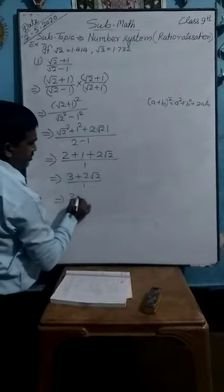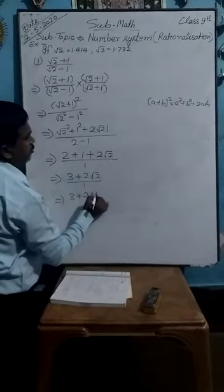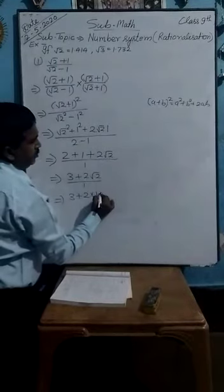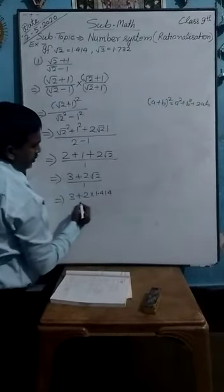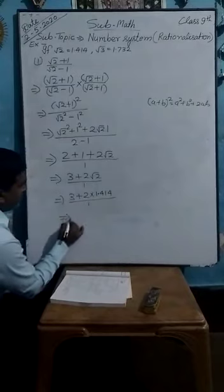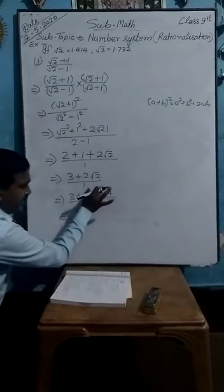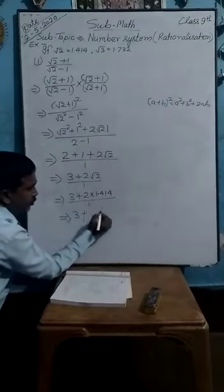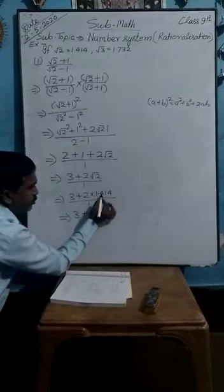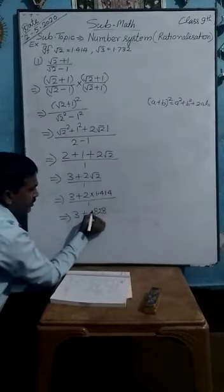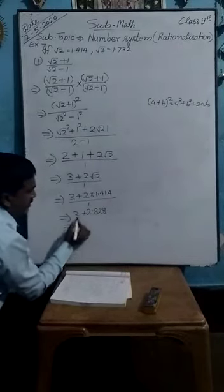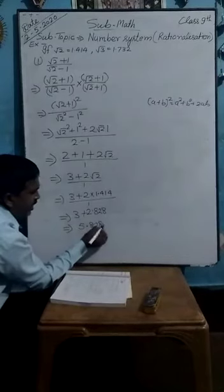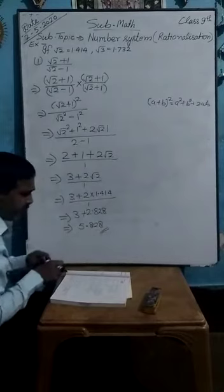And now put the value: 3 plus 2 into 1.414, upon 1. Now multiply: 2 into 1.414 equals 2.828. Then add: 3 plus 2.828 equals 5.828. It is your answer.